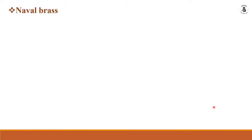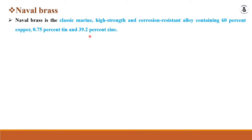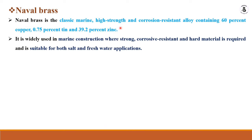Naval brass is the classic marine high-strength corrosion resistance alloy containing 60% copper and 0.75% tin, with the remainder zinc. It is mainly used for marine construction where strong corrosion resistance and hardness are required, and it is suitable for salt bath and fresh water applications.